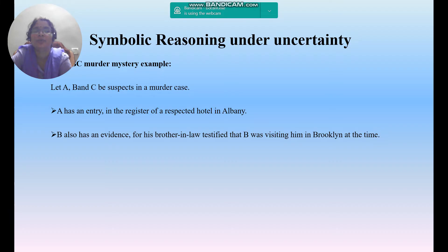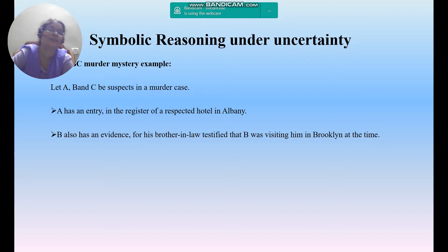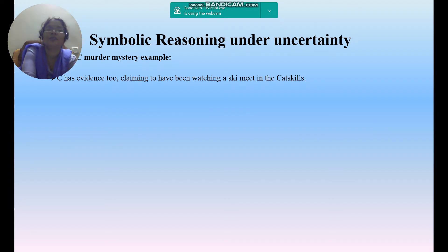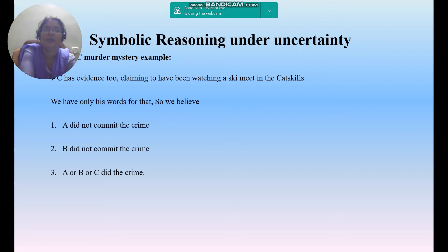B is also showing his own evidence — his brother-in-law testified that B was visiting him in Brooklyn at that time. So B went somewhere and is emphasizing he was not there at that point in time. C is also showing his own evidence that he was watching a sky meeting in the Catskills — he also has some meeting in Catskills to show as evidence.